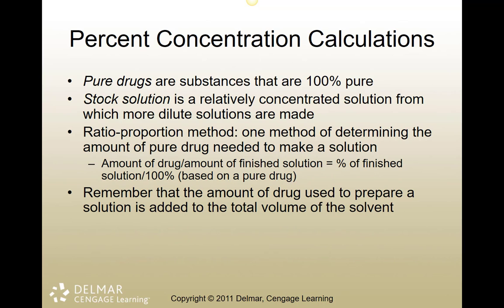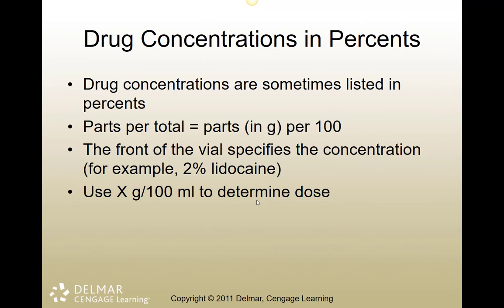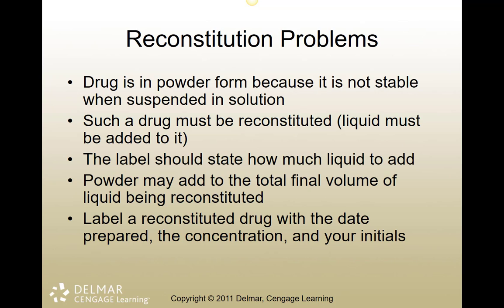When preparing solutions from stock solutions, you need to know the final concentration and work backwards. Many drugs are expressed in percentages — for example, 2% lidocaine or 1% lidocaine. A 2% drug means 20 mg per mL. A 1% drug means 10 mg per mL. A 0.1% drug means 1 mg per mL. That's the basic calculation.